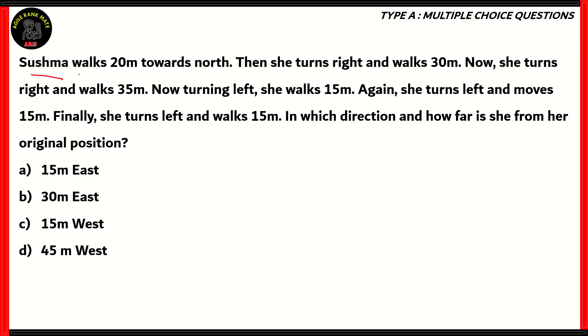Next question. Sushma walks 20 meters towards north. Then she turns right and walks 30 meters. Now she turns right and walks 35 meters. Then she turns left and walks 15 meters. She turns left again and moves another 15 meters. And finally, she turns left and walks 15 meters. We need to find out in which direction and how far is she from her original position. Is it 15 meters east, 30 meters east, 15 meters west, or 45 meters west?